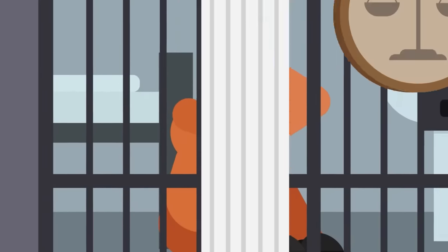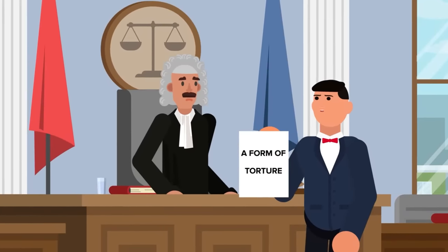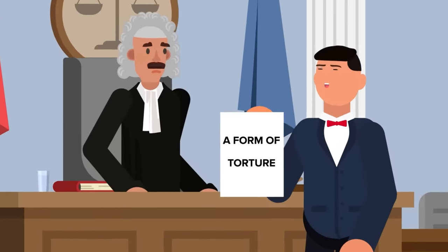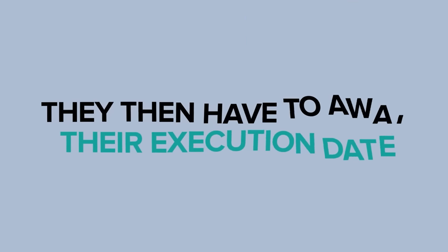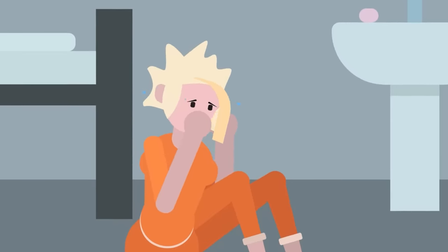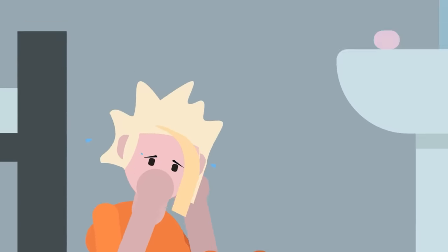They are put into solitary confinement, which human rights organizations have classified as a form of torture. They then have to await their execution date. However, the situation for female death row prisoners can be much worse, especially when things go very wrong.